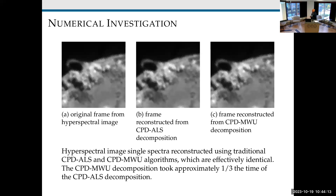We choose the bias on our coin to amortize the update costs. At every iteration, we select the sketching rate i with probability proportional to its weights. Here are some numerical results from this algorithm, which we call CPD-MWU (multiplicative weights updates). We're looking at a low-rank approximation of a hyperspectral image. The first image is the original, the second is reconstructed using plain CPD-ALS, and the third is using our decomposition — they're effectively identical — and ours took approximately a third of the time.